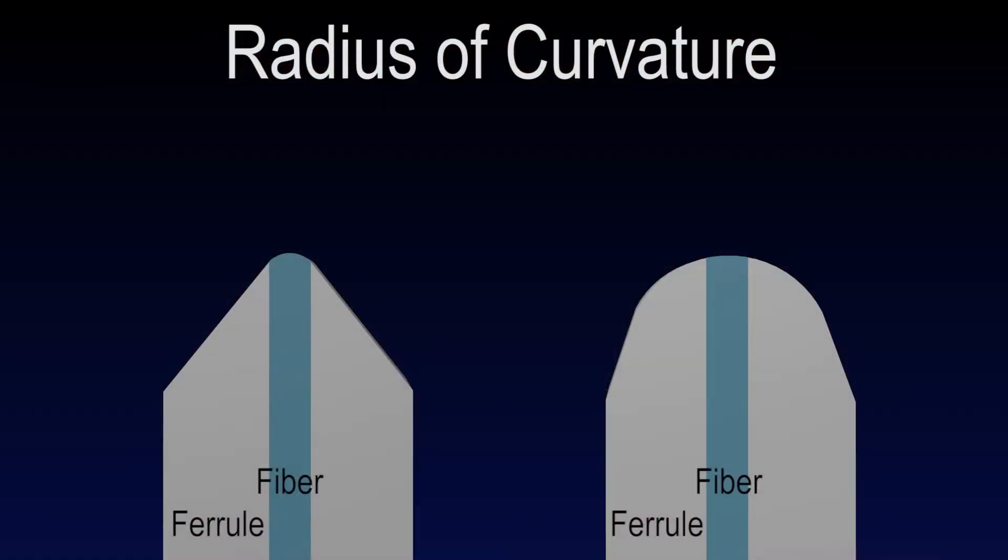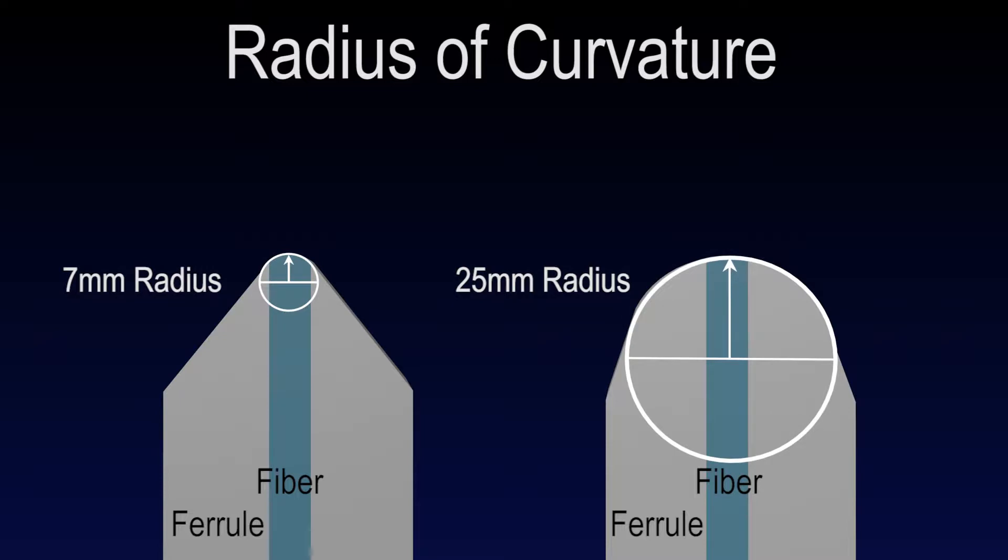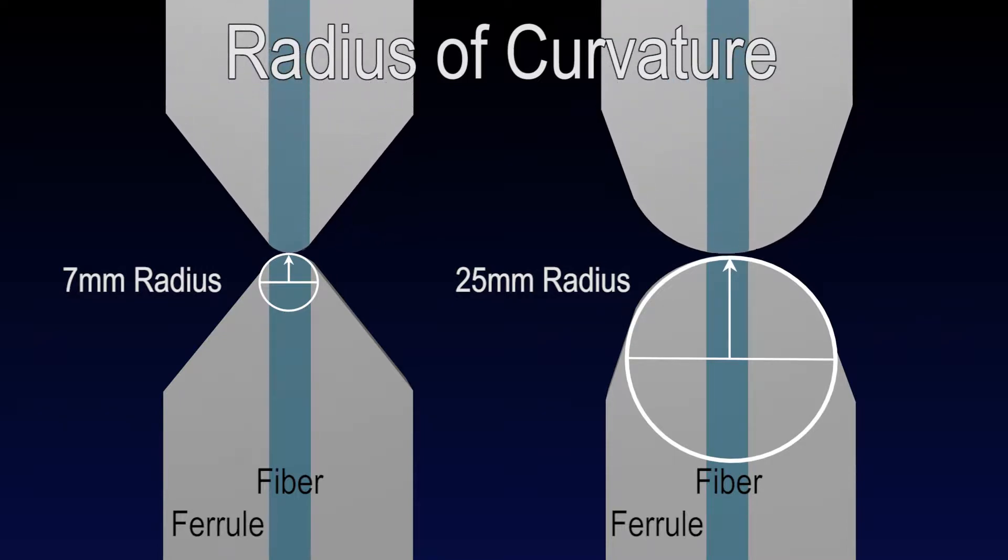Ferrule end-faces are domed to ensure the contact area between mating connectors is at the center of the ferrule where the axis of the fiber core is located. The radius of this dome is called the radius of curvature. If the radius is too small, there will be a smaller contact area between fibers which places more force on the fibers during mating. If the radius is too large, physical contact between the fibers may not be achieved due to a larger contact area.